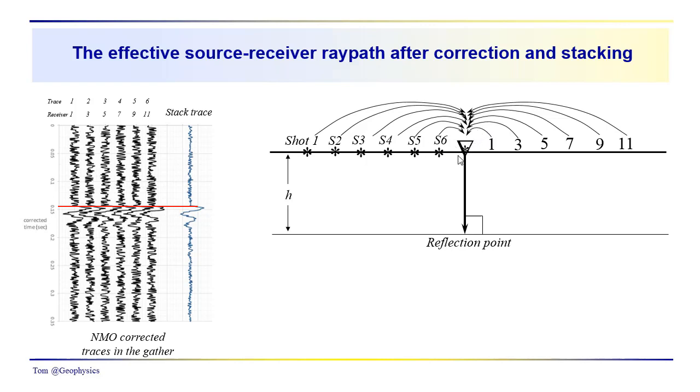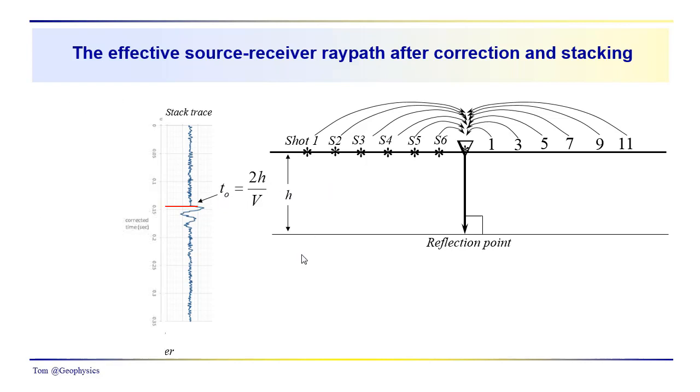We don't actually have to blow up the receiver to get a normal incidence seismic record, but that's effectively what we've done. We've positioned and corrected the data so that all the arrival times are equal to the T0, 2H over V time, in the stack trace.